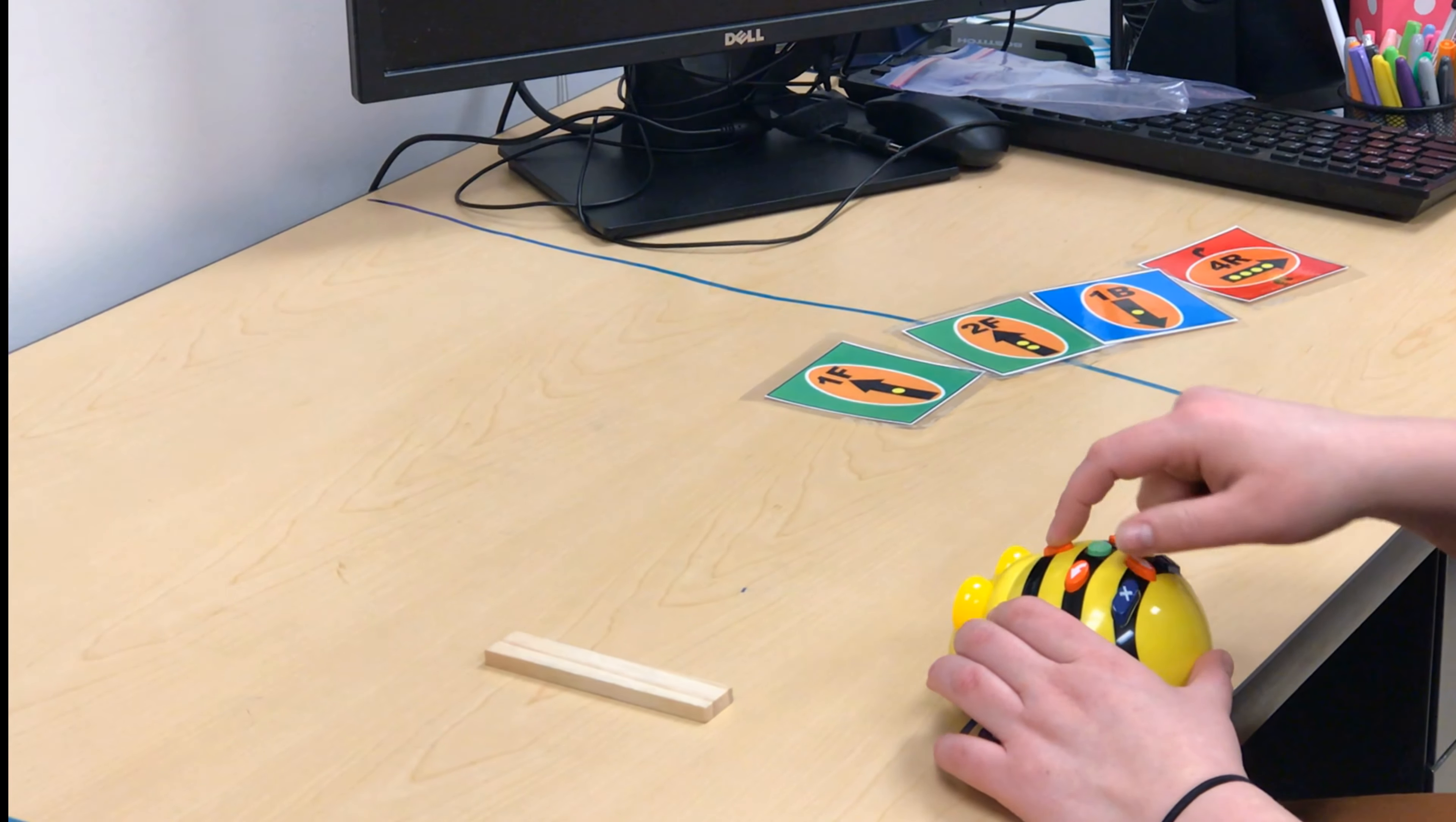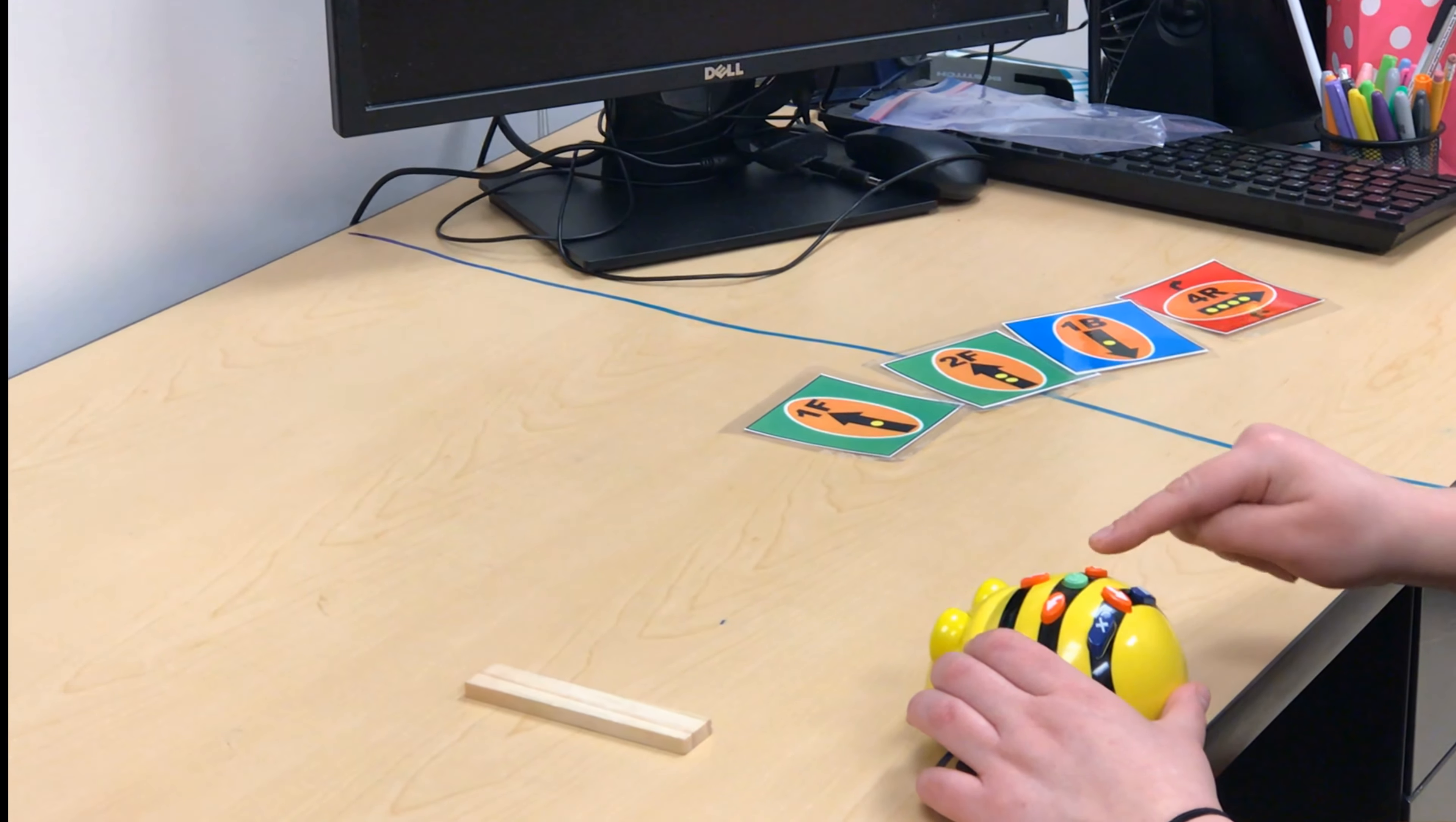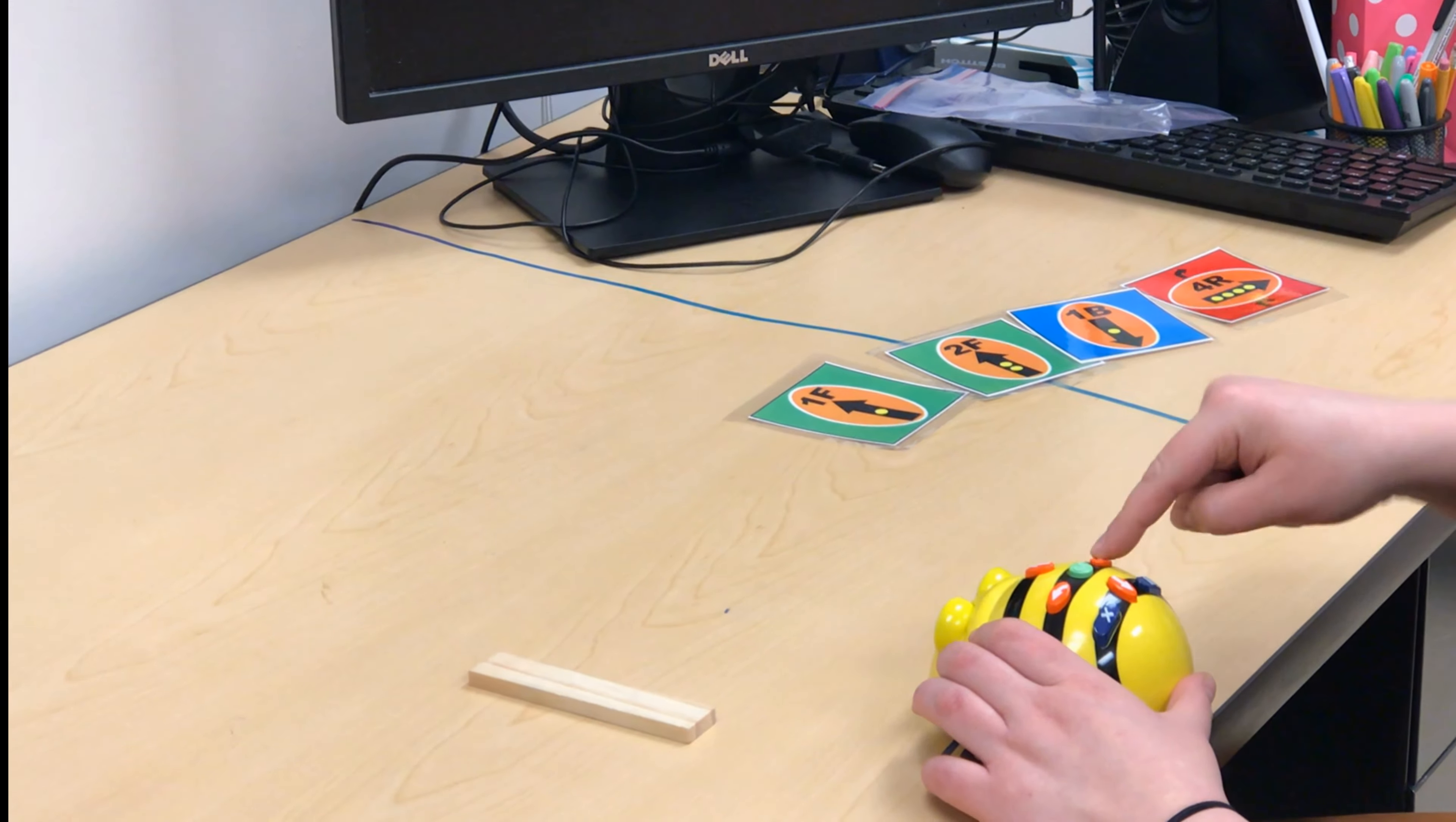Let's try it. Start with clear. Forward one, one, two. Back one. Right two, three, four. Let's try it.